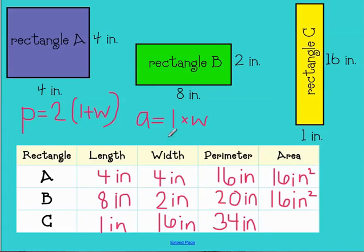And area equals length times width. So area equals one times 16, which is 16 inches squared.